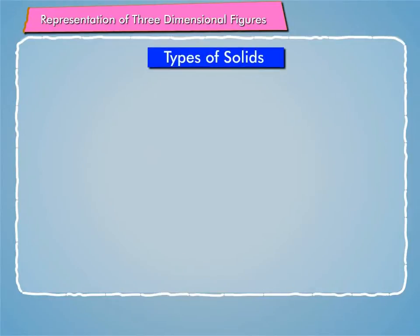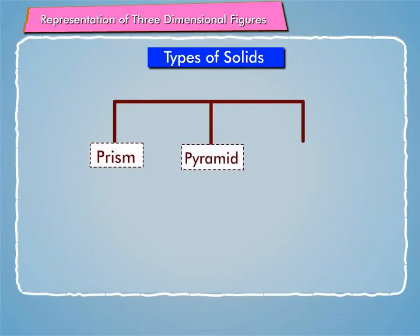Let us first learn about different types of solids. We have learnt mainly three types of solids. These are prism, pyramid and sphere.